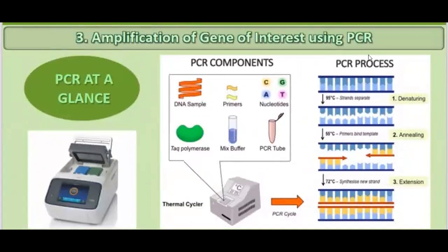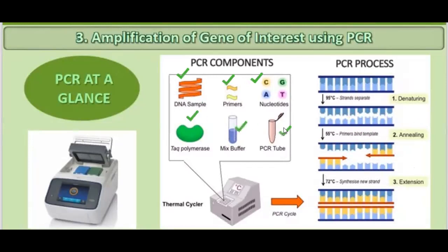To summarize PCR: first denaturation, then annealing, then extension. The temperature and the Taq polymerase enzyme are very important. Taq polymerase is extracted from the organism Thermus aquaticus. The components needed for PCR are: a DNA sample, primers, nucleotides, the polymerase, a mix buffer, and a PCR tube to carry out the process.